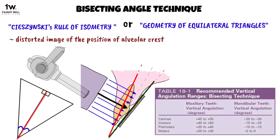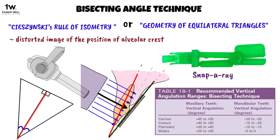Have a look at this table to see the vertical angulation values. There are many commercially available film holders designed for the bisecting angle technique; Snaparray is one of the most commonly used film holders.